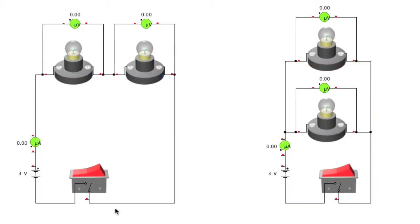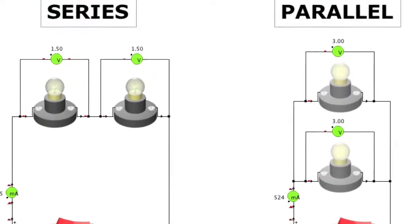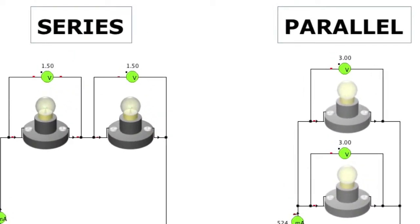So now let's close the switches and see what happens. We can see the two bulbs in each circuit glow with equal brightness in their own circuit. But when you compare the two circuits it's obvious that the bulbs connected in parallel are glowing much brighter. Why the difference?